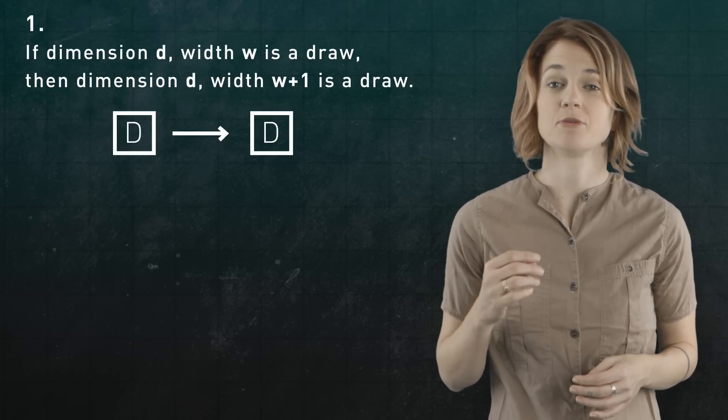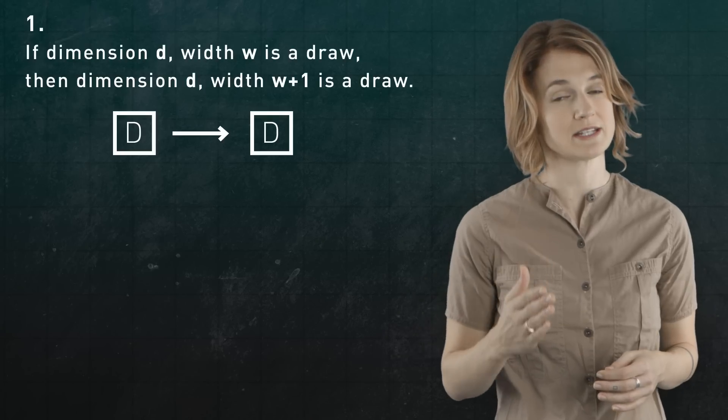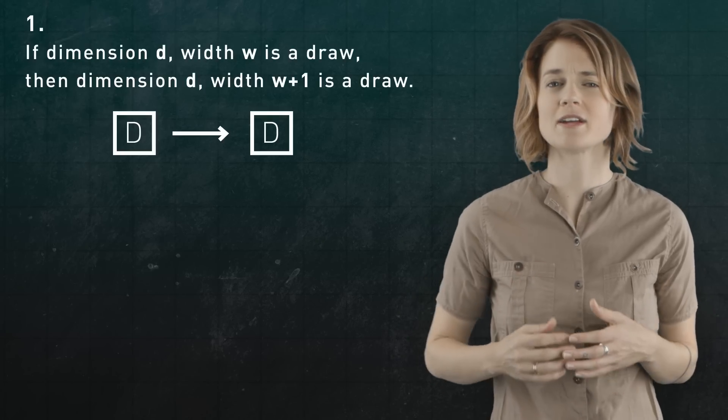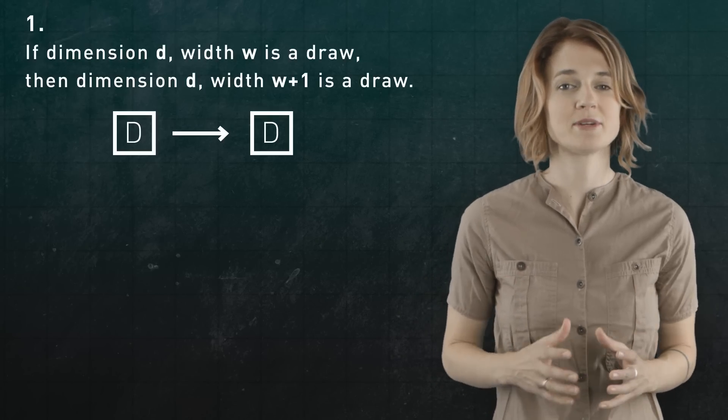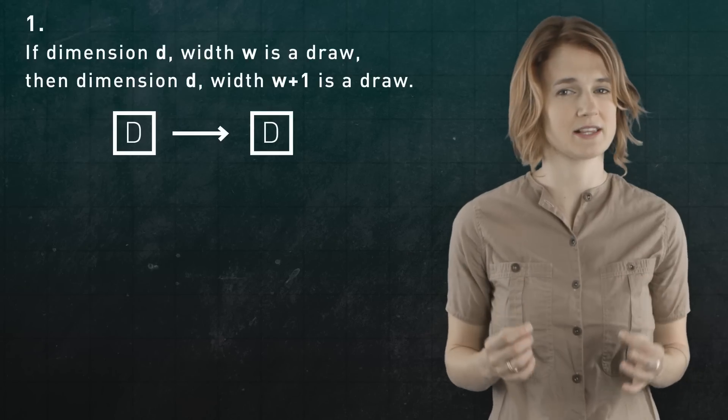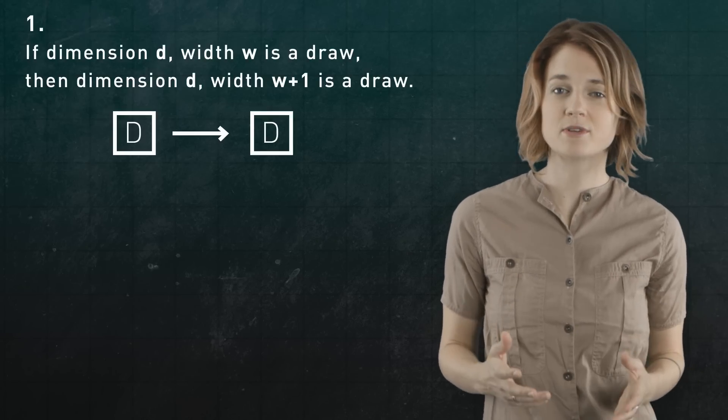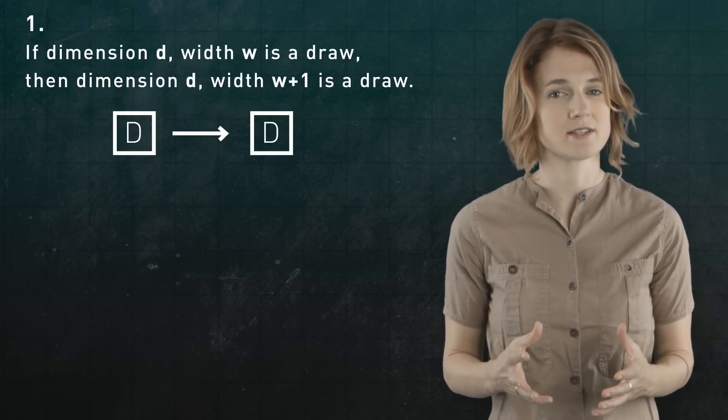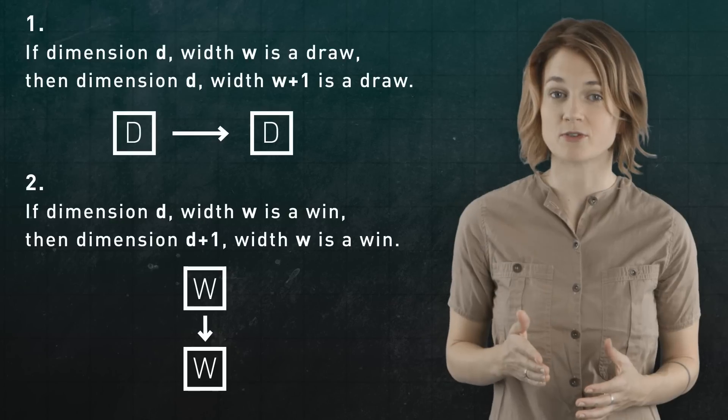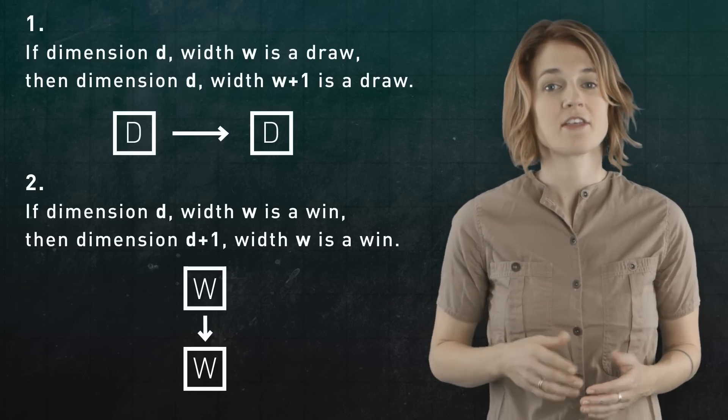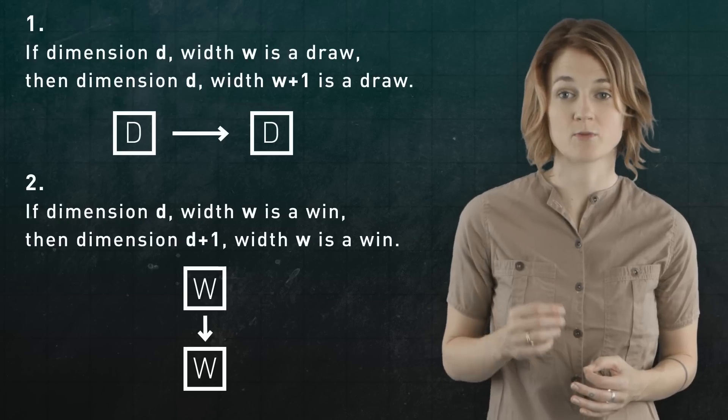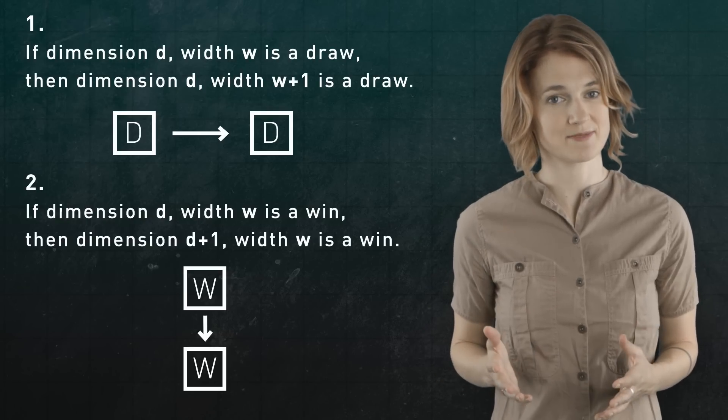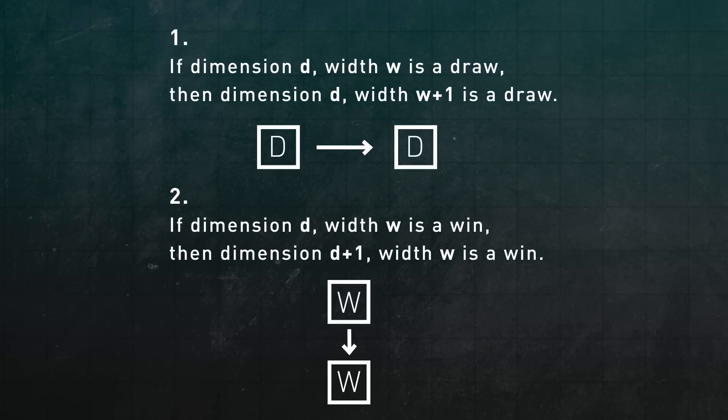But as we increase the dimension, which corresponds to moving down a column, it creates many more lines. Higher dimensions have more directions for winning lines to go in. Intuitively, that makes it easier for X to force a win. In other words, if dimension D with W is a win for X, then dimension D plus 1 with W is a win for X. Those two statements are actually conjectures. No one has ever proved them, but they seem very plausible.